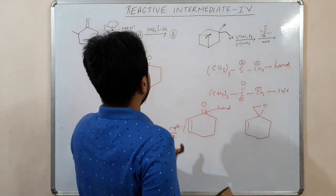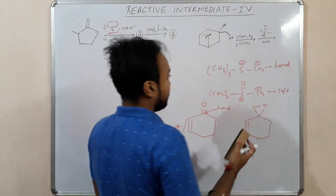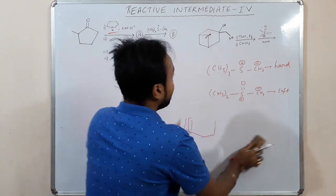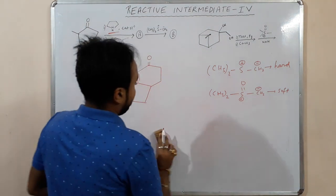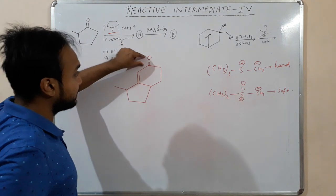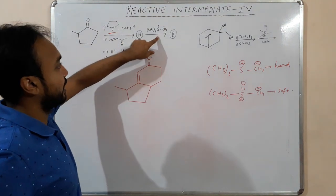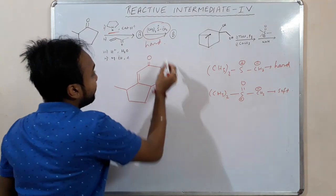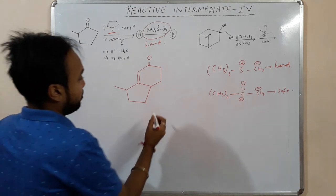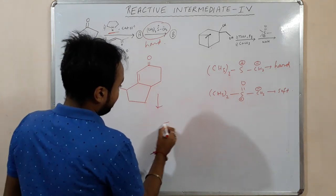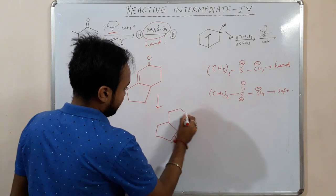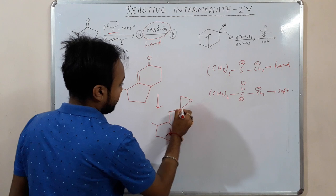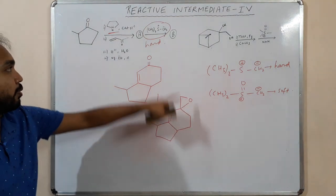If you have no option — only one option — we will discuss that in the next example. Here we have a hard center and a soft center. Since the sulphur ylide is hard, it will basically add to this carbonyl carbon. So the product will be this one — this is the product.